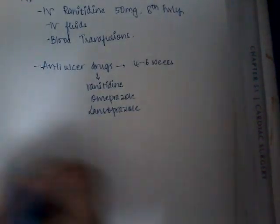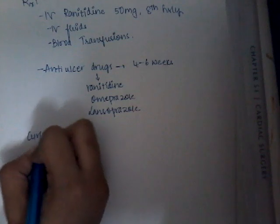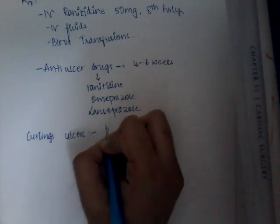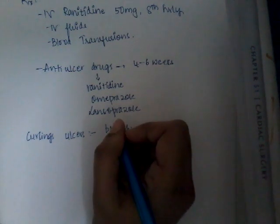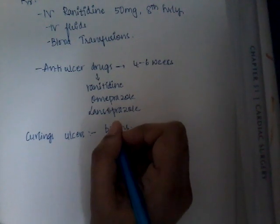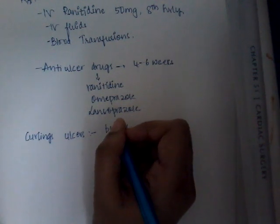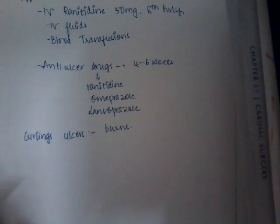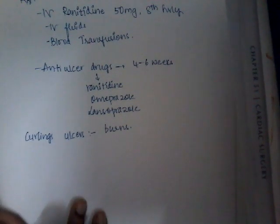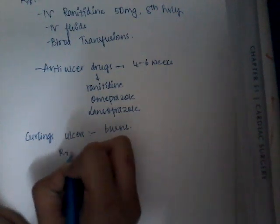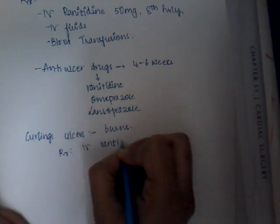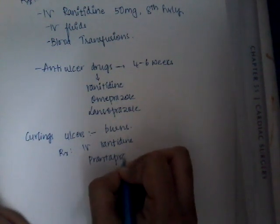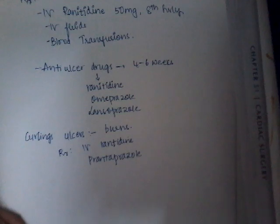What are the other types of ulcers? Curling ulcers are the ulcers due to burns as I have said, and these occur in the duodenum. These present as pain in the epigastric region with vomiting and hematemesis as we have already seen how acute gastric ulcer presents. Now the treatment is conservative in that we give IV ranitidine or pantoprazole. So this is about Curling ulcers.